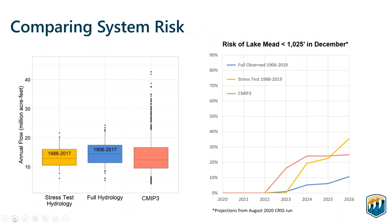The difference in hydrology also makes risk look different when put through CRSS. On the left we have the same distributions — stress test, full observed record, and CMIP3 — and on the right we have a projection of the probability of Lake Mead going below elevation 1025 in December between now and 2026. The risk unfolds differently: CMIP3 jumps to higher risk initially, but the stress test surpasses it by 2026, while the full observed record stays low. So we have three very different views of the probability of Lake Mead falling below 1025.